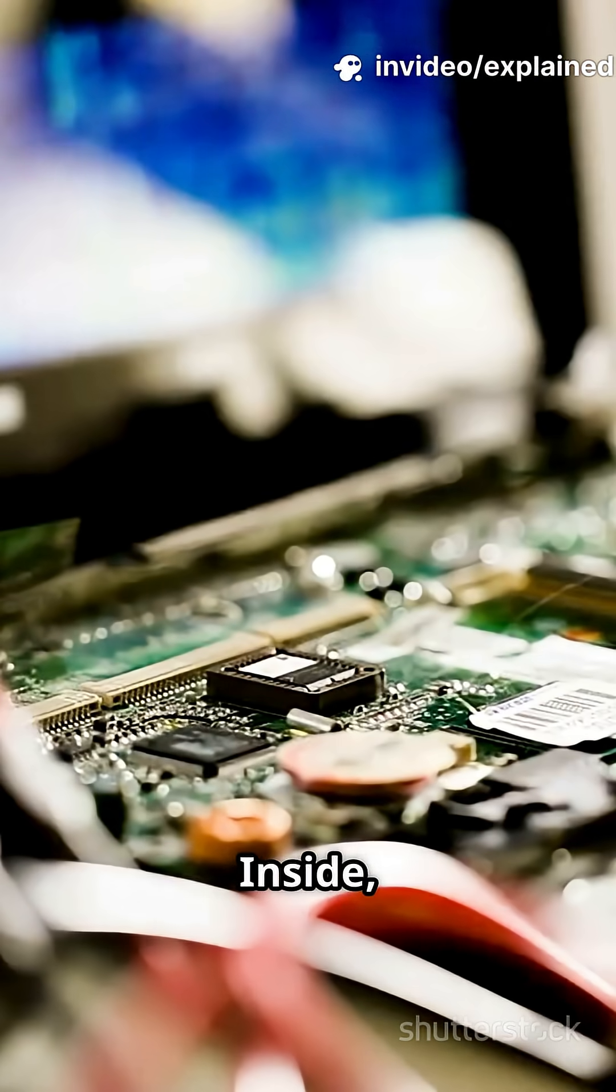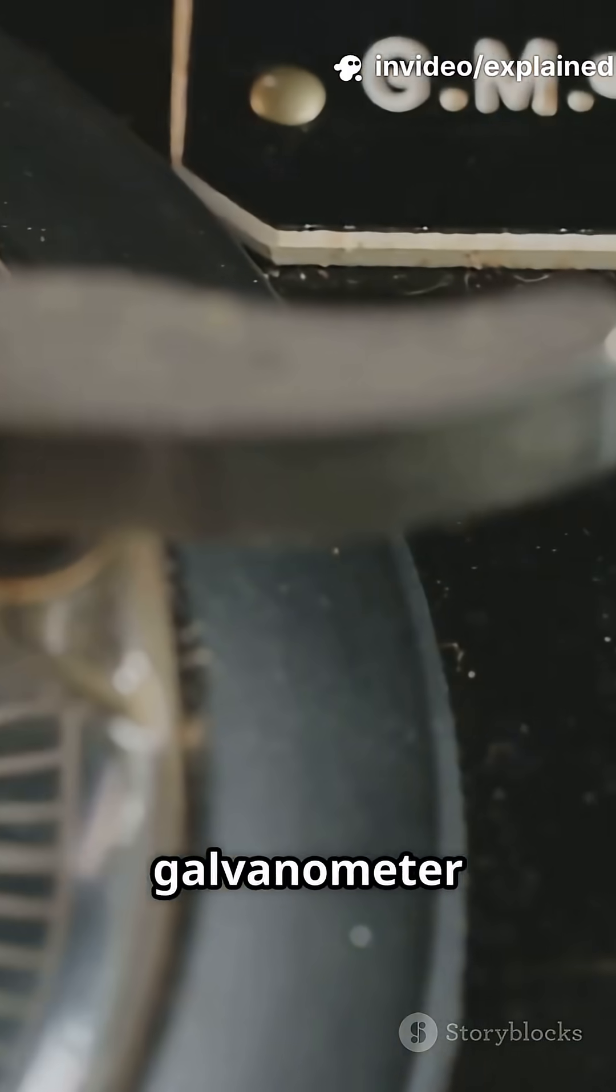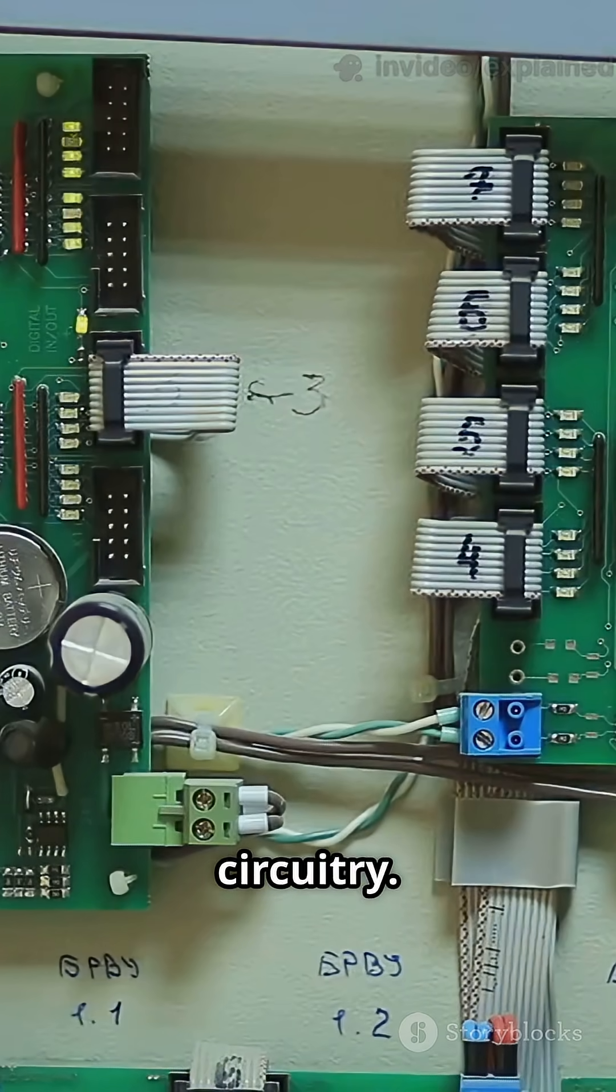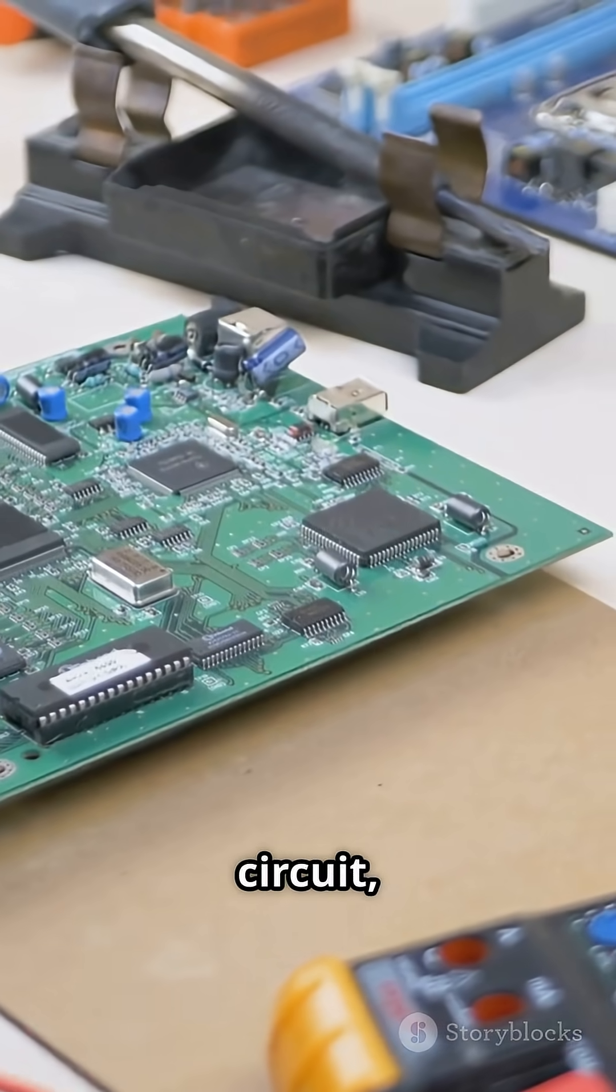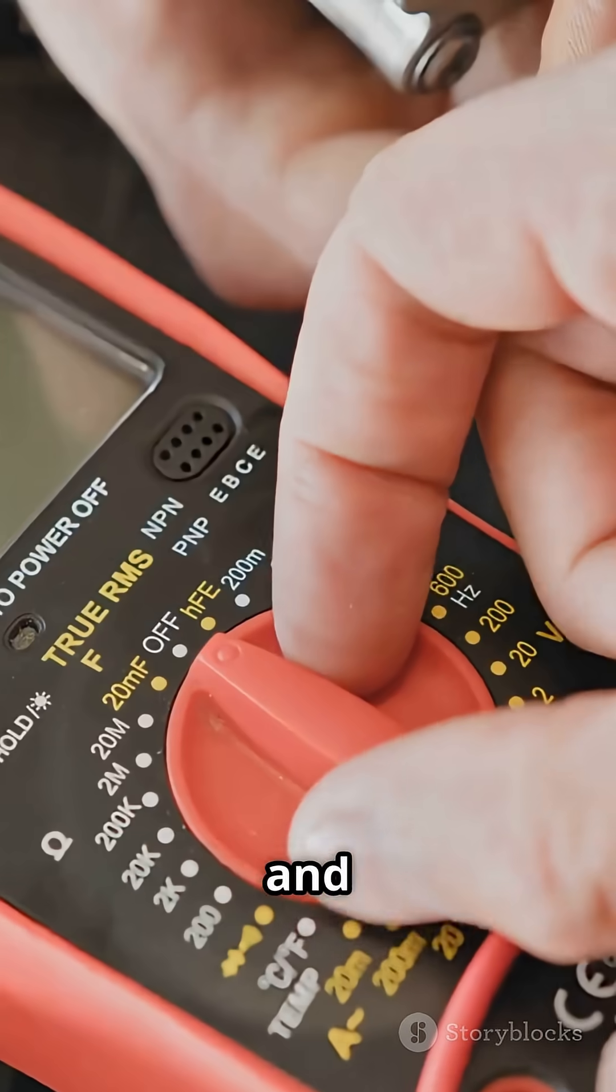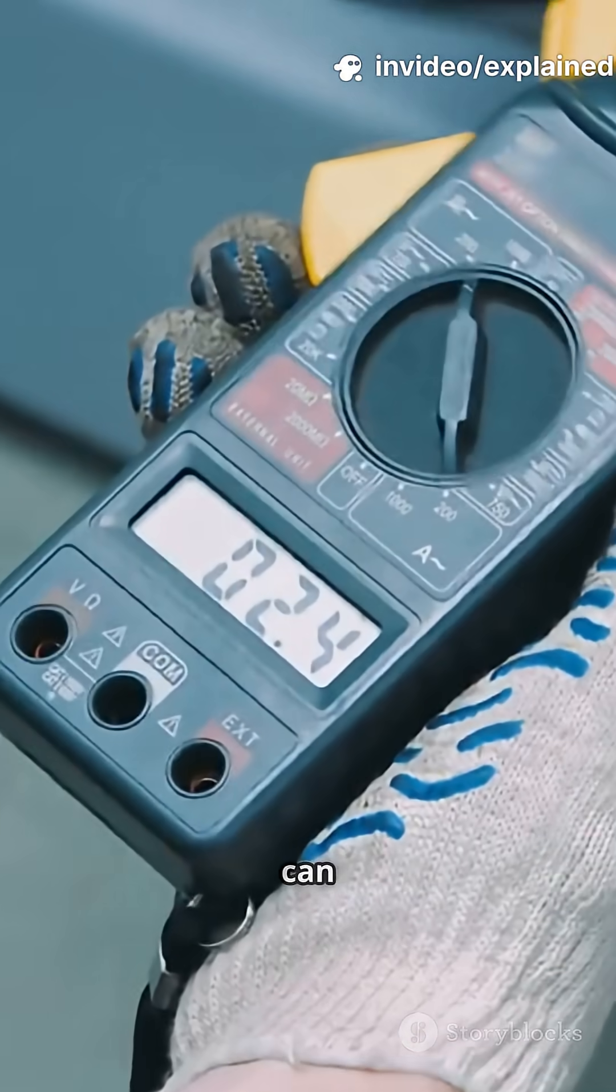Here's how it works. Inside, a multimeter uses a sensitive galvanometer and some clever circuitry. When you touch the probes to a circuit, it senses how electrons flow and instantly converts that into numbers you can read.